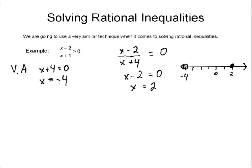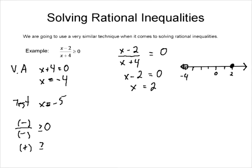Just as we did when solving quadratics, we go back and test the original inequality. Let's test x equals negative 5. If negative 5 goes in the numerator, that makes it negative. If negative 5 goes in the denominator, that makes it negative. Is a negative divided by a negative greater than or equal to zero? Of course — that's a positive value, which is greater than or equal to zero. So this is a yes; it satisfies the inequality.